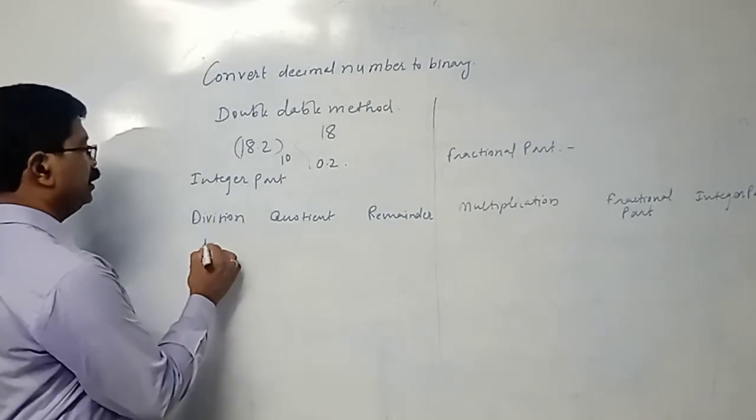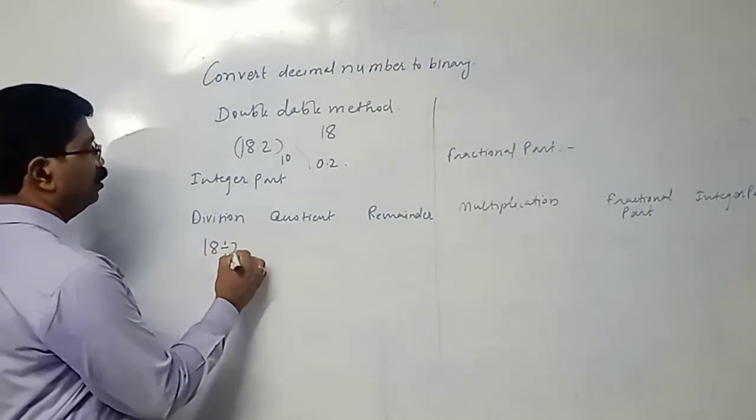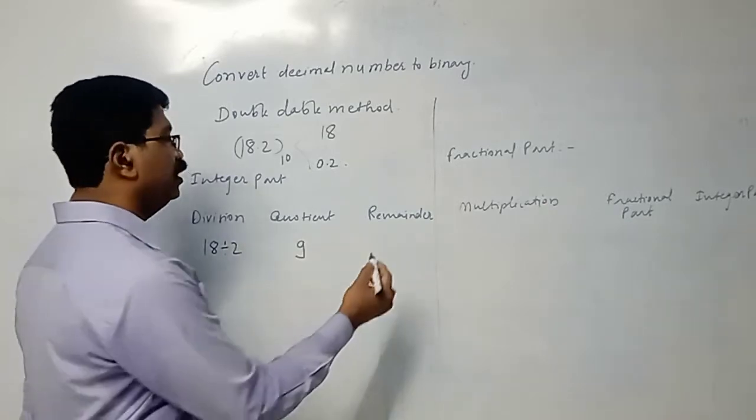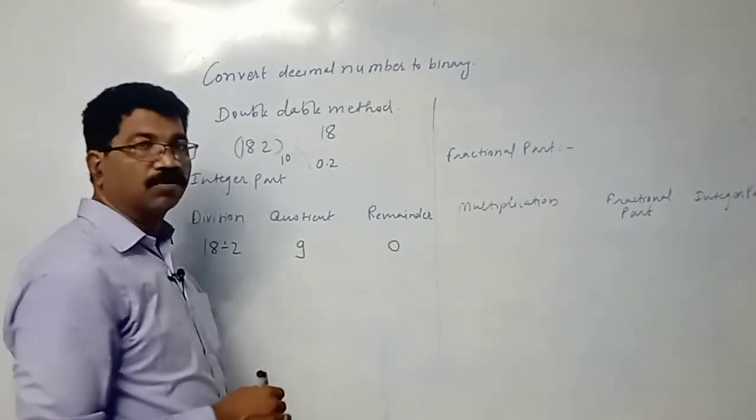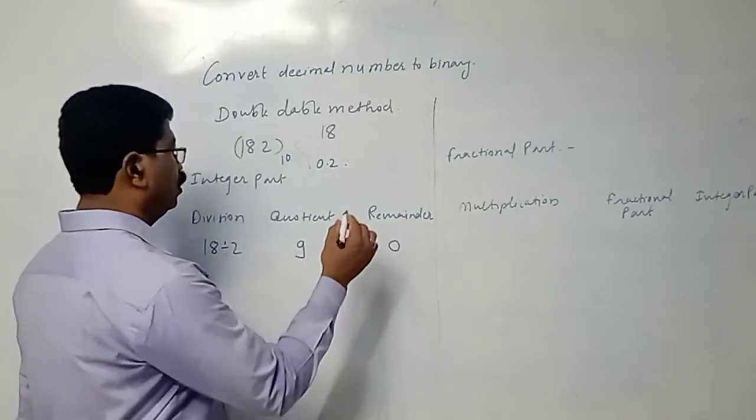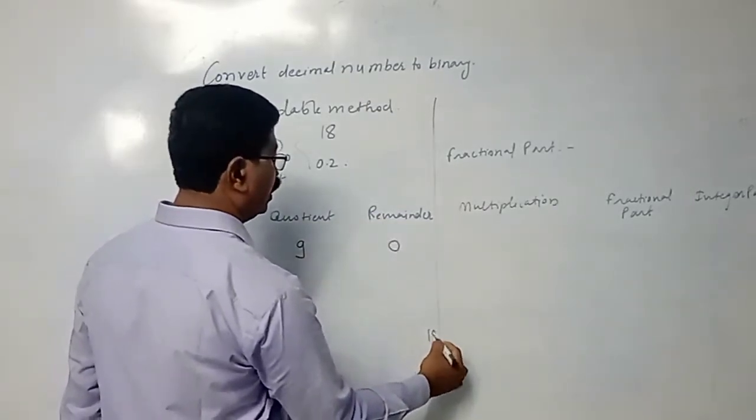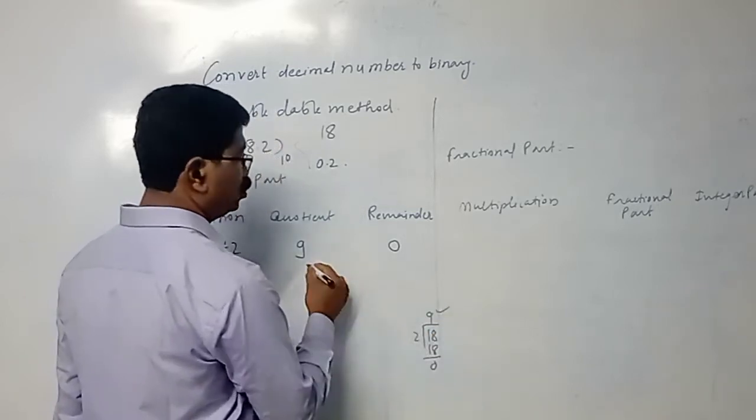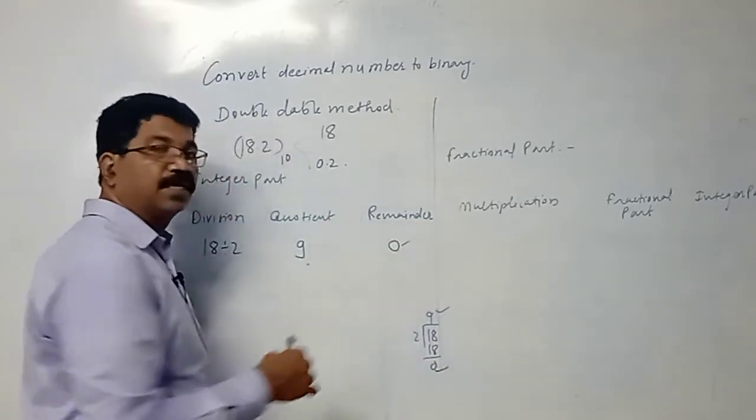Let us divide 18 by 2. Two nines are 18, so quotient is 9. It is divided completely, so remainder is 0. If you have not understood, you can divide 18 by 2. Two nines are 18, the remainder is 0. So 9 is the quotient and 0 is the remainder.